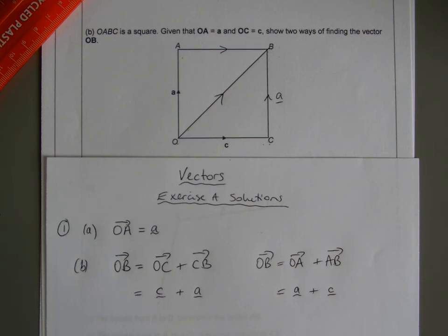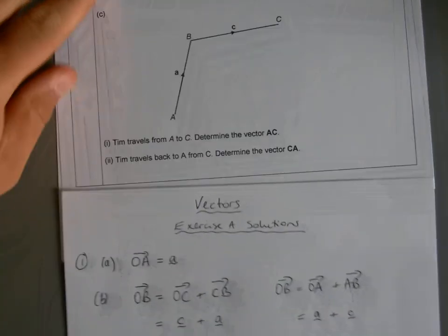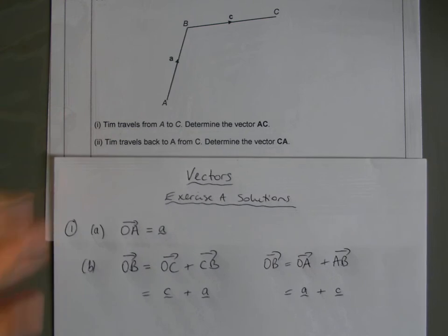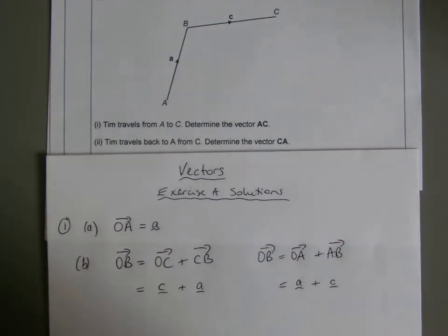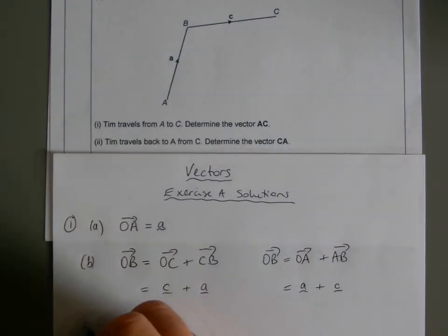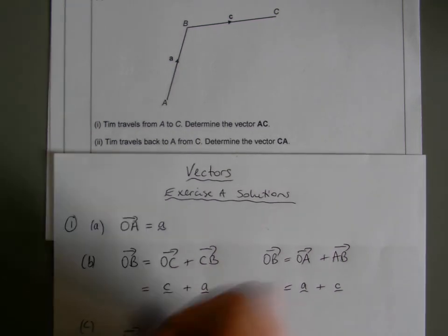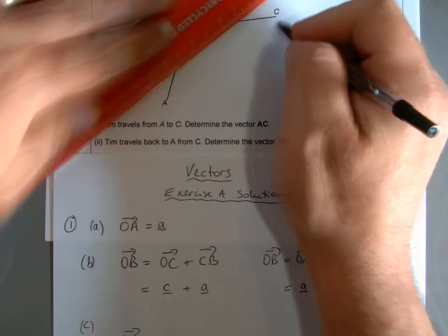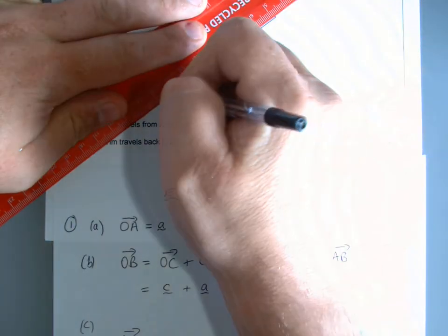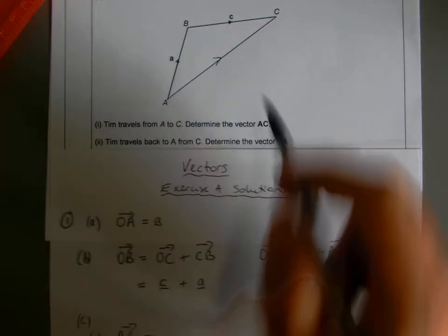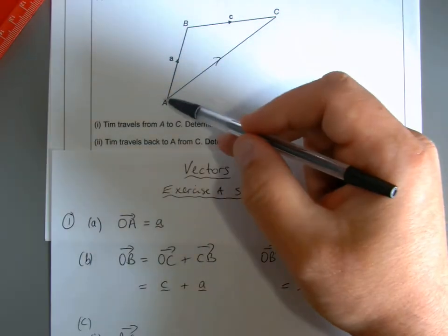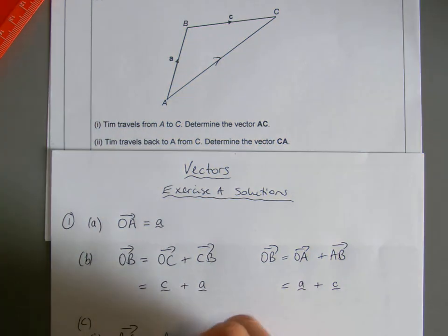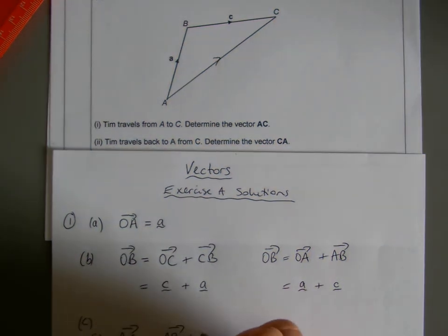Finally then, part C: Tim travels from A to C. Determine the vector AC. Well, AC, if you think about it, AC is direct there. We can draw it in if you want. Well, we can go an alternative approach. We can go A to B plus B to C.